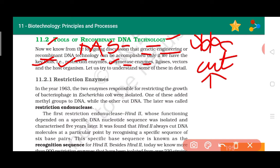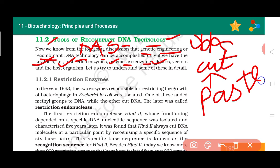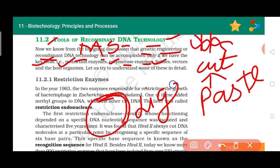The third tool is ligase. Ligase means glue. You all understand what glue does — it pastes things together. So the DNA that is being cut also needs to be pasted back. This pasting is done through an enzyme whose name is ligase — it is known as DNA ligase.